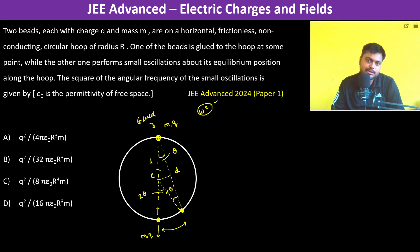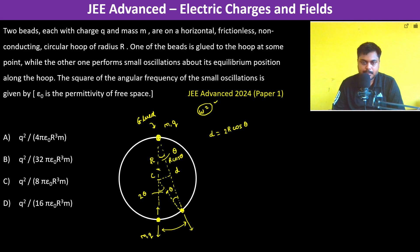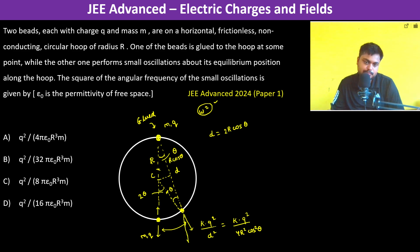The distance d between the two beads is 2R cosθ, since each half is R cosθ. The Coulomb force experienced is F = kQ²/d² = kQ²/(4R² cos²θ). This force makes an angle θ with the normal, giving a tangential component F sinθ and a radial component F cosθ.